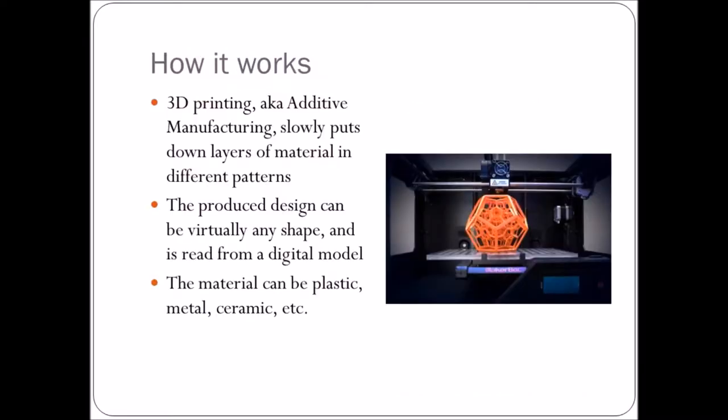So how does it work? Well, 3D printing is known as additive manufacturing for a reason. It takes small amounts of material and over a course of time lays them down in layers and builds the part from the bottom up. The part can basically be designed in any shape and it's read from a digital CAD file. Parts can be printed in plastic, metal, and ceramic.